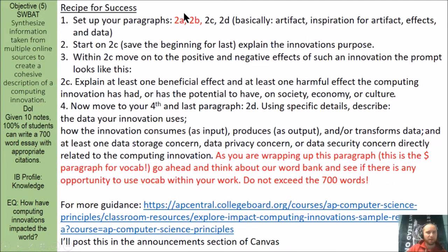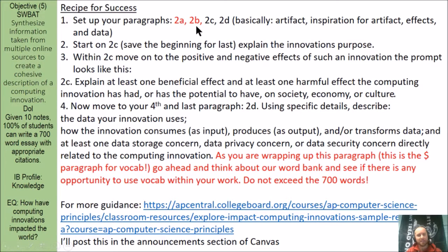Here is a recipe for success. I suggest you approach the performance task this way — though you can use other strategies. First, skip 2A and 2B and don't do the artifact first — do it last. Start on 2C and 2D, and remember 2E is just the citation part. So 2A is the artifact. 2B is writing about what inspired you to create the artifact. 2C is about the effects of your innovation. And 2D covers the data — the how, why, and concerns related to the data part of your innovation.